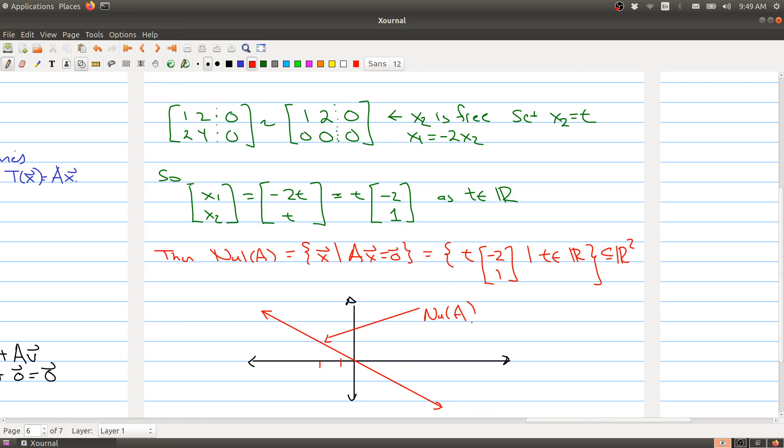So every point on the red line is my null space of my matrix. And so this is a subspace, and note that this corresponds to what we mentioned earlier, that subspaces of R^2 look like lines through the origin, which is what I have in this particular case.